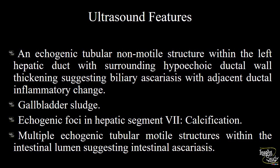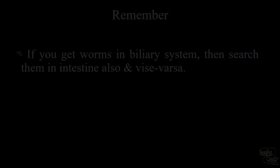In conclusion: an echogenic tubular non-motile structure within the left hepatic duct with surrounding hypoechoic ductal wall thickening suggesting inflammatory change. The gallbladder shows hypoechoic sludge. Echogenic foci in hepatic segment 7 represent hepatic calcification — which may first confuse you and cause you to stop looking for further findings. Multiple echogenic tubular motile structures in the intestinal lumen suggest intestinal ascariasis.